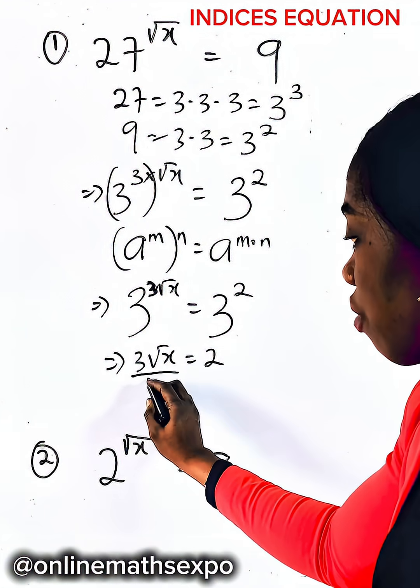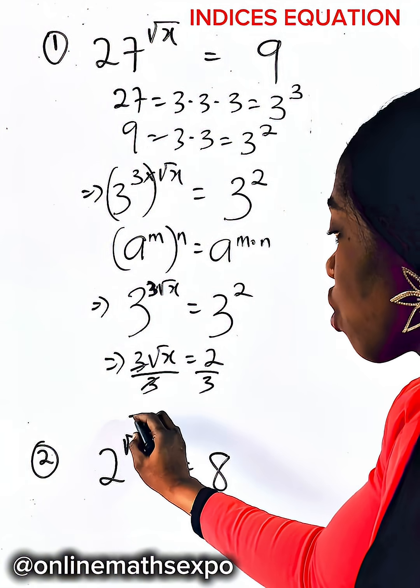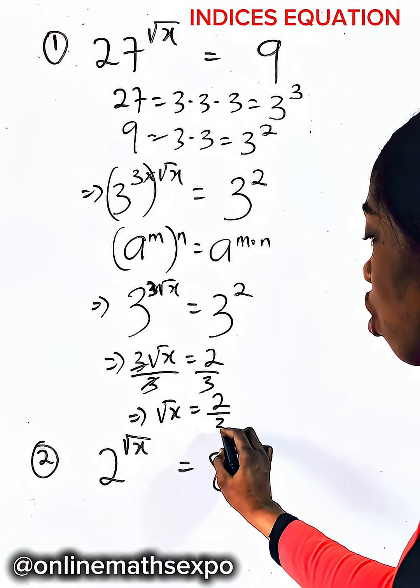To get this, first divide by 3 so that you clear this. So you have root x is equal to 2 thirds.